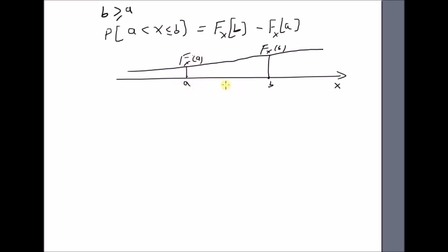Let us define the event E_b, which is equal to all the values of x which are less than or equal to b. So this is the event E_b.